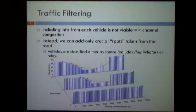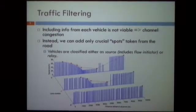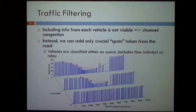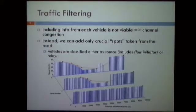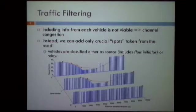However, including information from every vehicle is not a viable solution, because large messages are the main cause of channel congestion. Instead of inserting all information, we include only the crucial spots — the main points that best represent the road. For that we classify vehicles as either source vehicles, which insert new information into the traffic map because they have important information, or relay vehicles, which simply relay the information to other vehicles behind as quickly as possible.